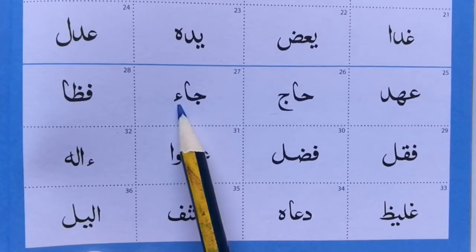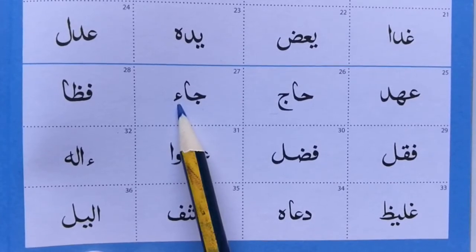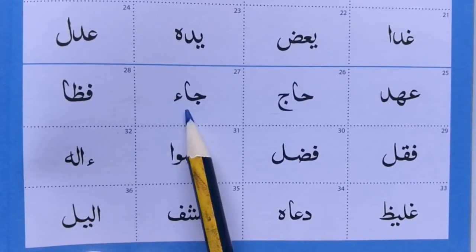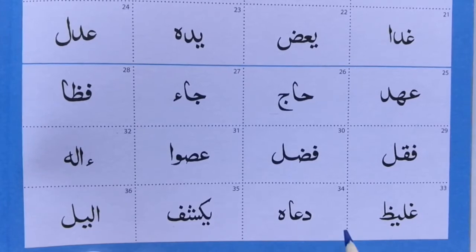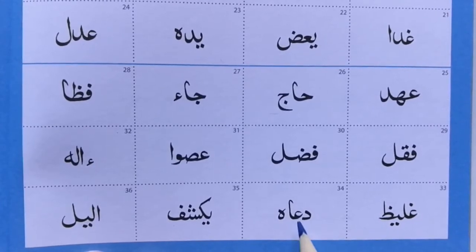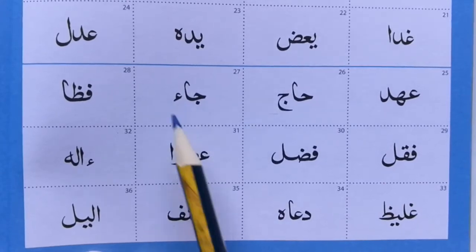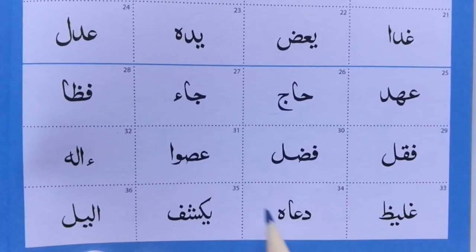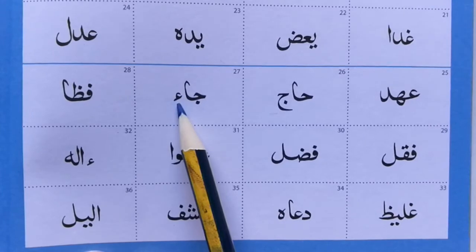Now the Hamza and the Ayn — you can get a little bit confused with them. I'm looking for an Ayn on this page, in this section. We have one here, we have one here. See the size difference between the Ayn and the Hamza — that normally gives it away, because the Hamza is very small.